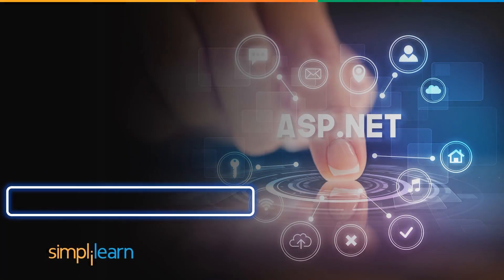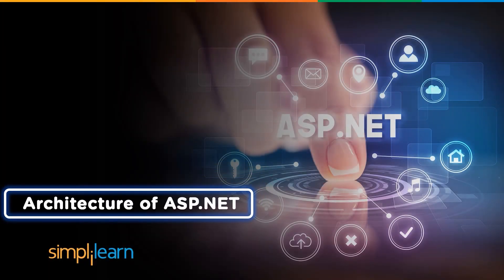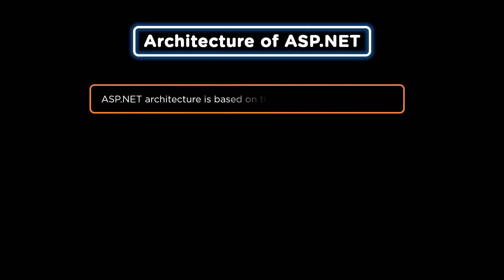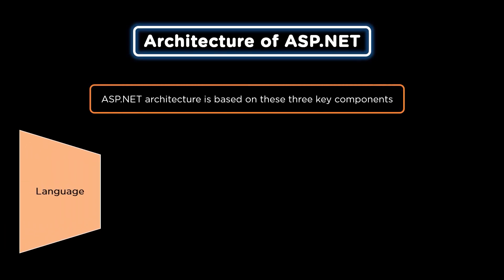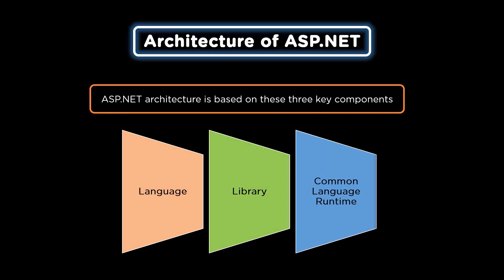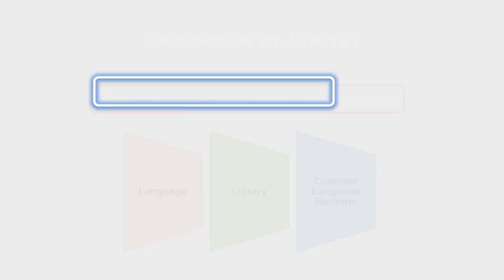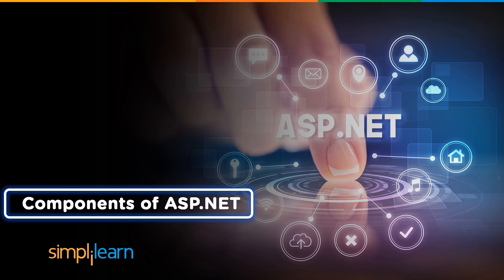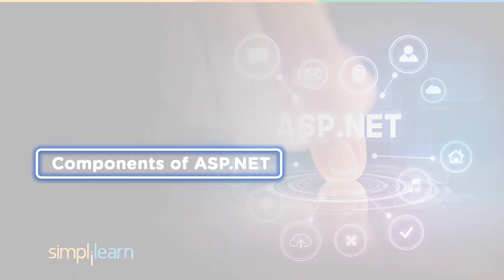Now that we know what ASP.NET is, let's have a look at the architecture of ASP.NET. ASP.NET architecture consists of three different components. The first component is Language, then comes Library, and finally comes the Common Language Runtime. We shall learn about these three components one after another.